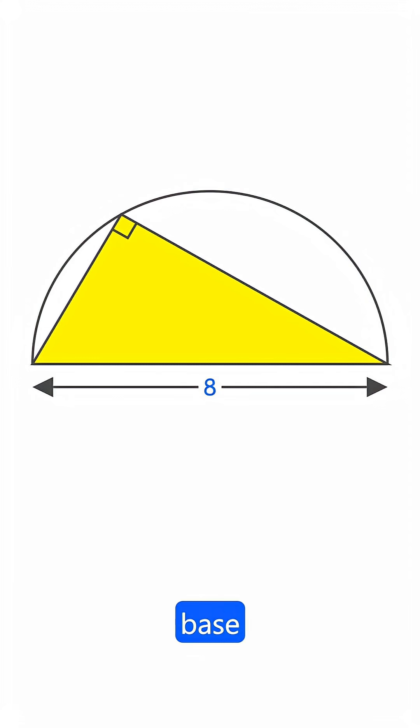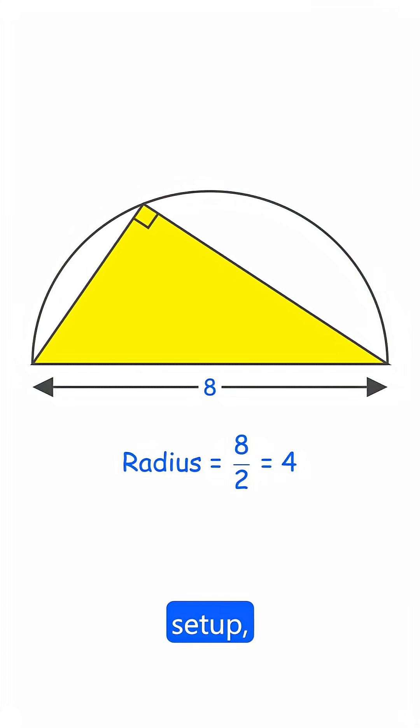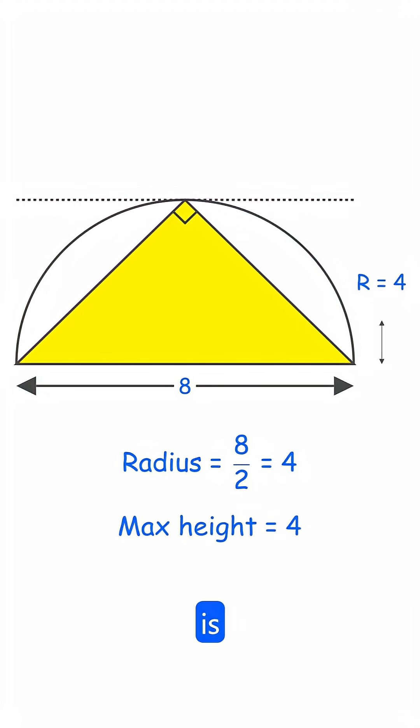If we draw a circle with the base as the diameter, then any triangle formed with the third point on the arc will be a right-angled triangle. And in this setup, the maximum possible height is the radius of the circle, which is 4.